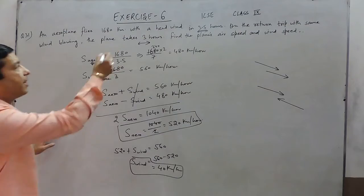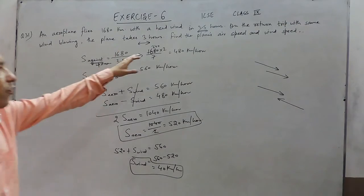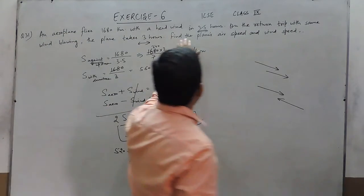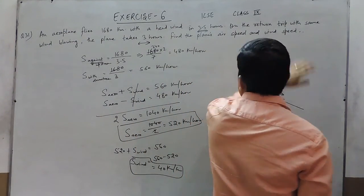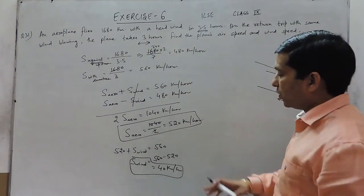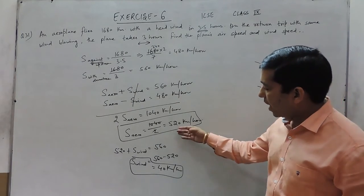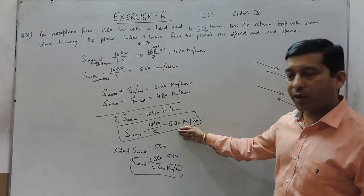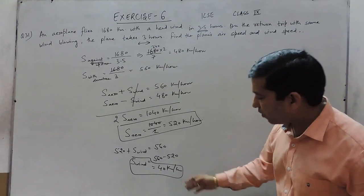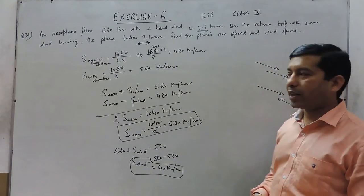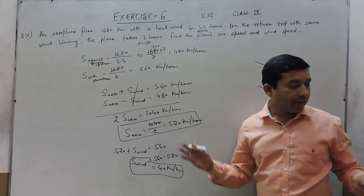Here we know that we have to find the airspeed of the plane and the wind speed. So the speed of the aeroplane is 520 km per hour and the speed of the wind is 40 km per hour.